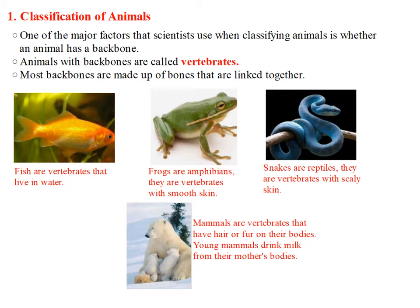We have different kinds of vertebrates. First of all, the fish. Fish are vertebrates that live in water. They use their gills to take in oxygen present in water. Frogs are amphibians. They are vertebrates with smooth skin. Most amphibians live part of their lives on land and part in water.